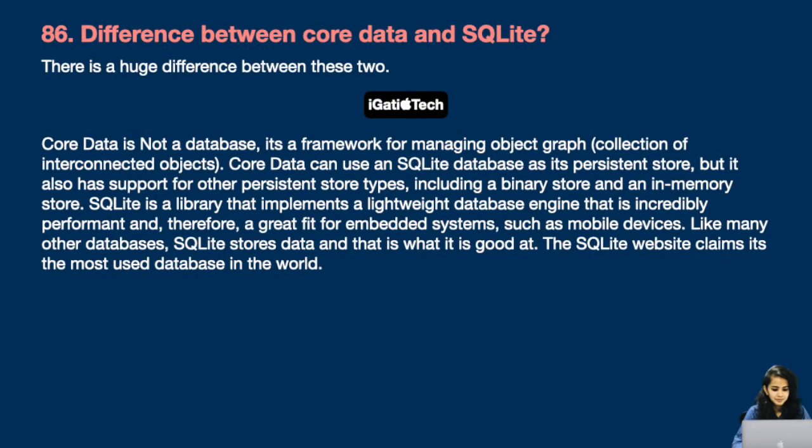Question number 86: Difference between Core Data and SQLite. Core Data is not a database — it's a framework for managing an object graph, which is a collection of interconnected objects. Core Data can use an SQLite database as its persistent store but also supports other store types including binary store and in-memory store. SQLite is a library implementing a lightweight database engine that is incredibly performant and a great fit for embedded systems such as mobile devices. The SQLite website claims it's the most used database in the world.